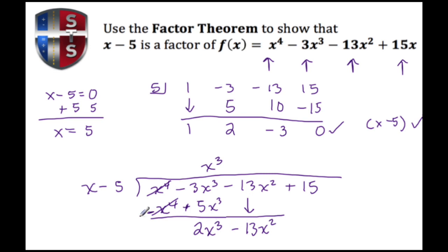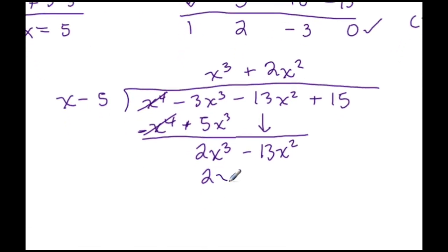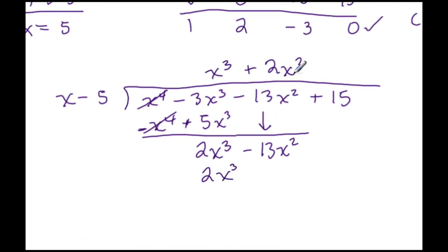Again we ask what to multiply X by to get positive 2X to the third — that's 2X squared. So 2X squared times X gives 2X to the third, and 2X squared times negative 5 gives negative 10X squared.